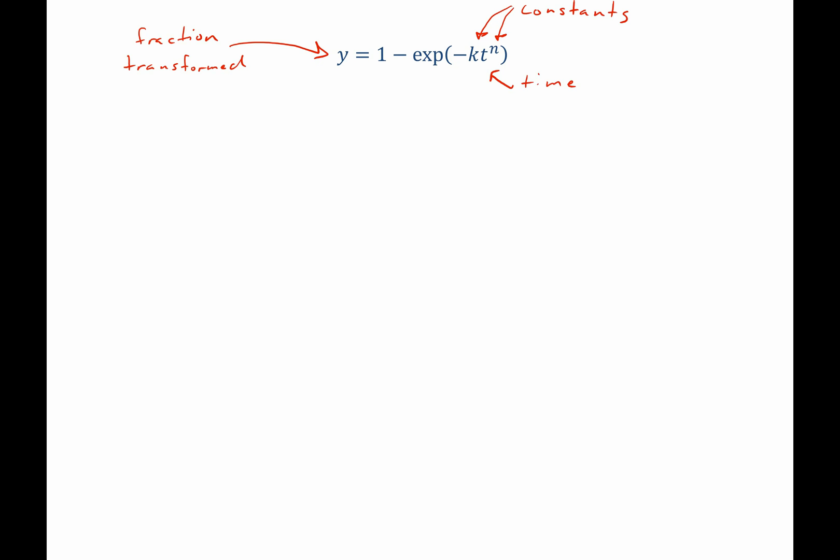One of the first things we can do to make it easier to work with the Avrami kinetics is rewrite this expression in a way that takes the two variables that we don't know, k and n, outside of the exponential. So we're going to take the exponential to the other side of the equation, as opposed to 1 and y. We're going to add exponential of negative kt to both sides and subtract y from both sides. That gives us exponential of negative kt to the n equals 1 minus y.